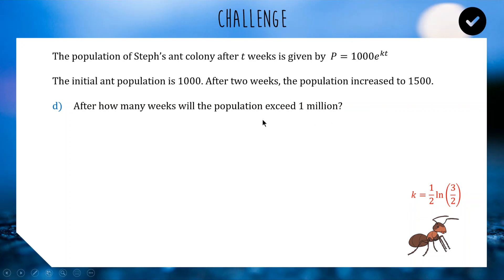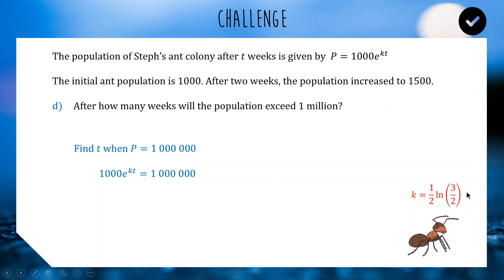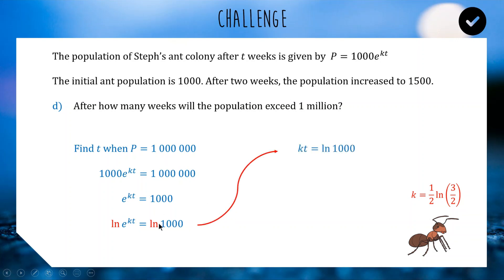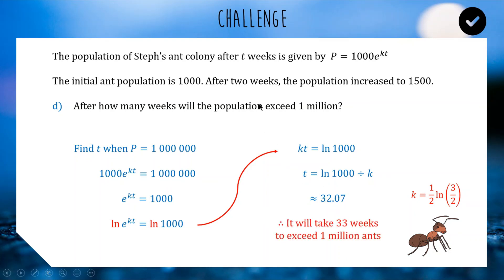The last question: after how many weeks will the population exceed 1 million? We set p equal to 1,000,000 and solve for t. Dividing both sides by 1000 gives 1000 on the left. Taking ln of both sides: kt equals ln of 1000. Dividing by k gives t equals ln(1000) divided by k. Putting that through the calculator gives approximately 32.07 weeks. Since we need to exceed 1 million, we round up to 33 weeks.